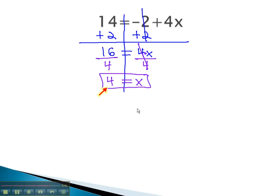Again, we notice that 4 is the number that makes this equation work. If we replace the x with 4, we have 4 times 4, which is 16. Minus 2 gives us the 14.